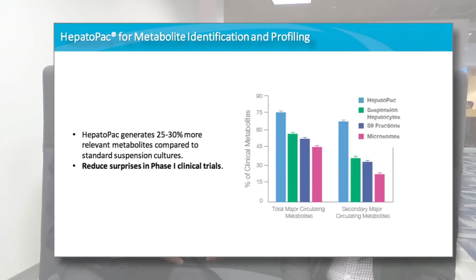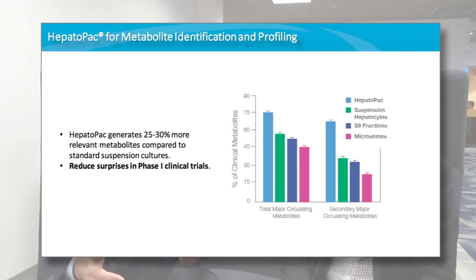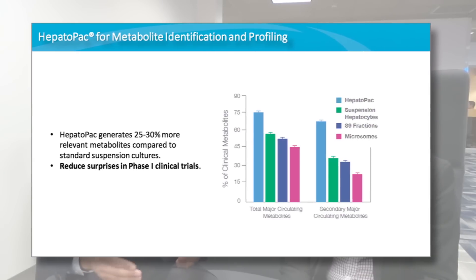So when doing drug metabolism analysis, you're potentially finding things you may not have been able to find before, either because of that lifetime or sensitivity? That's right. We've seen this repeatedly for a variety of applications — whether it's for met ID or metabolic stability. Hepatopac typically gives about a 25 to 30 percent improvement in prediction of in vivo outcomes over and above traditional suspension cultures.